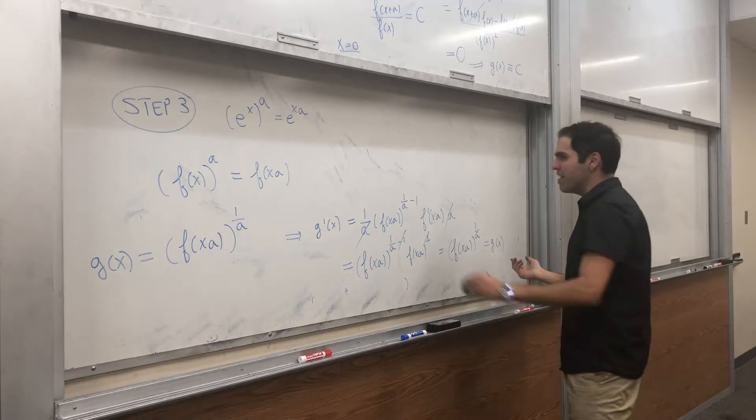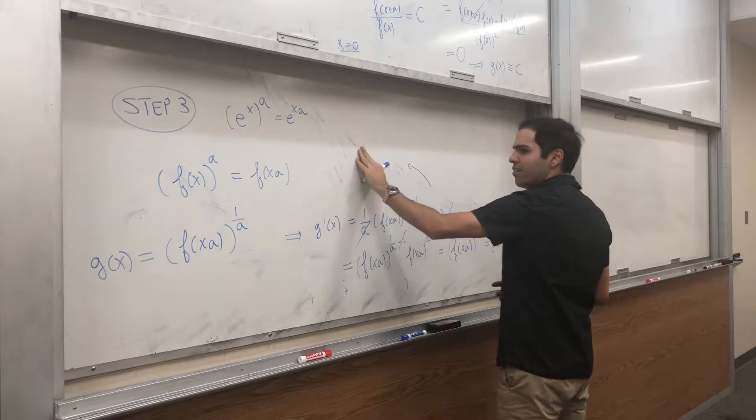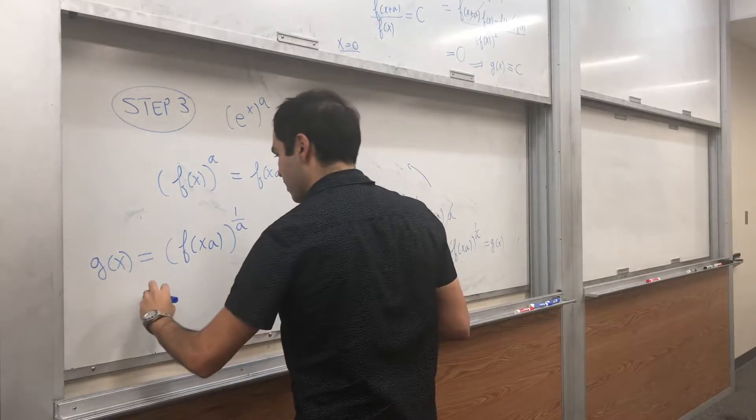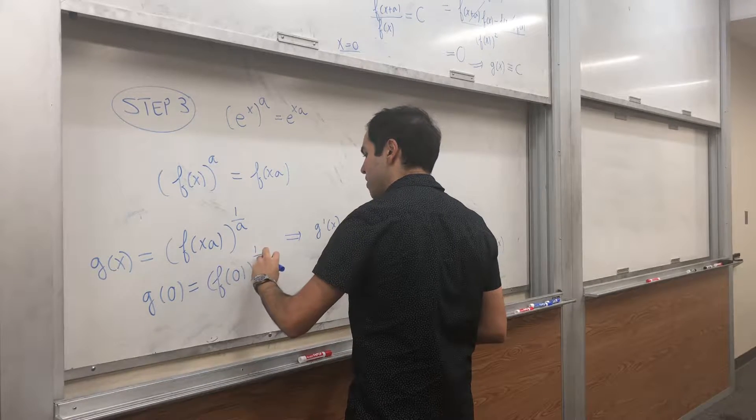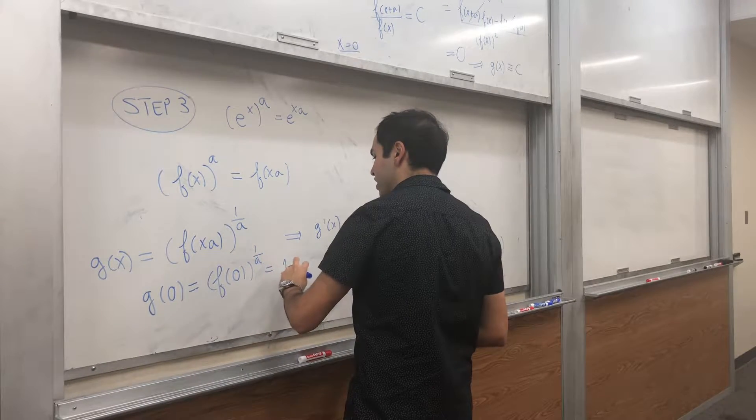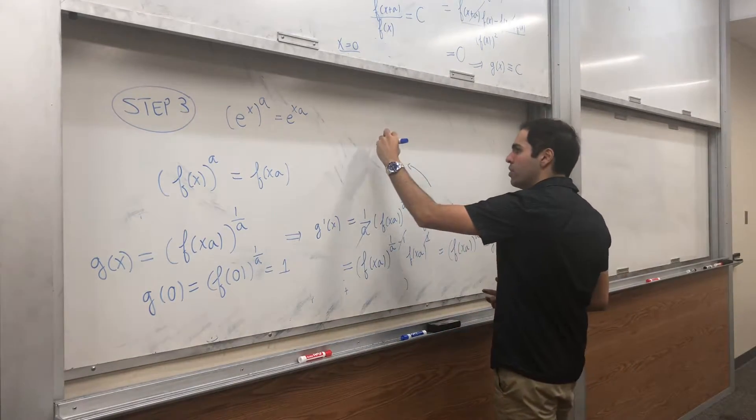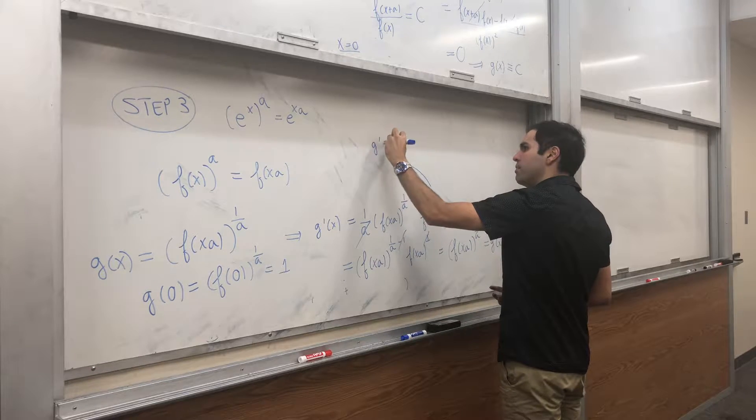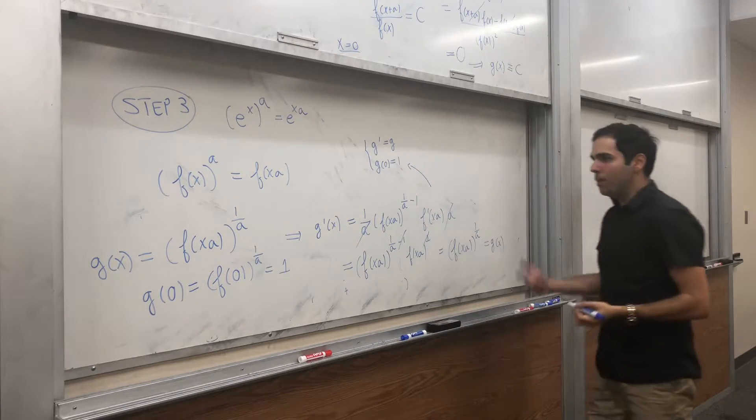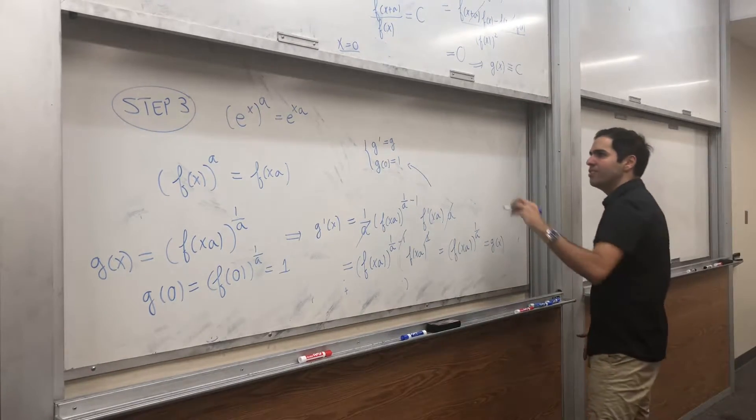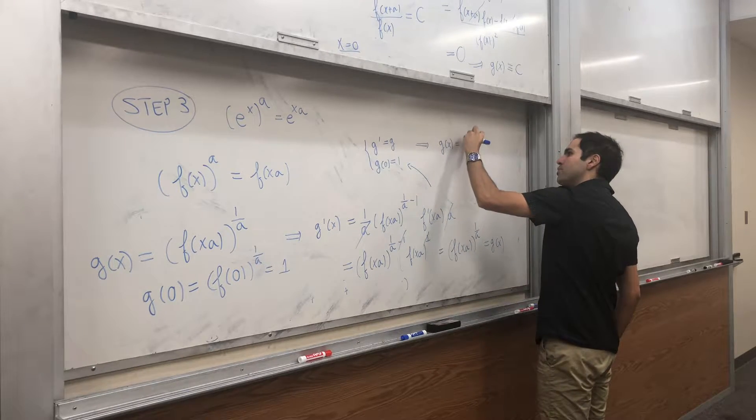So, g prime equals to g of x, and therefore, in particular, let's calculate g of zero. That's f of zero to the one over a, and that's one. Because remember, f of zero was one, one to the one over a is one. In other words, we have g prime equals to g, and g of zero equals to one. But, there is just one function which satisfies that, namely f. So, g of x equals to f of x.